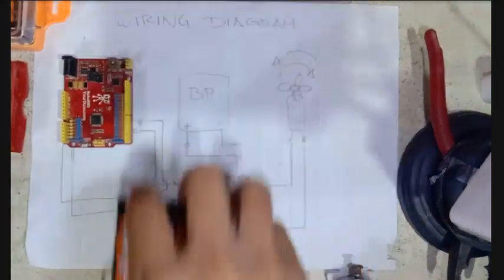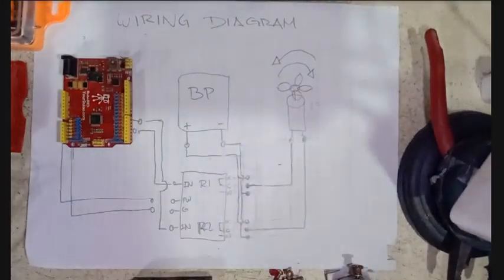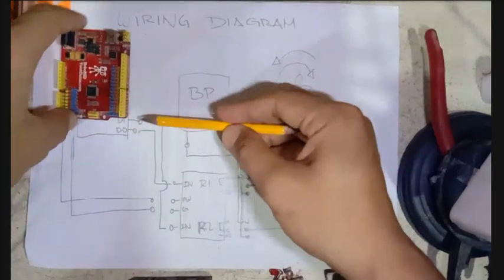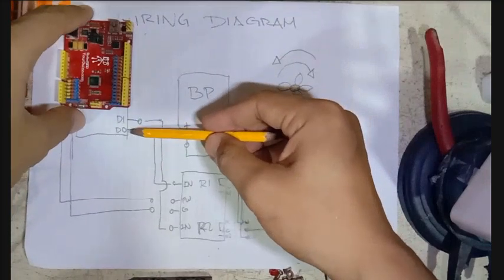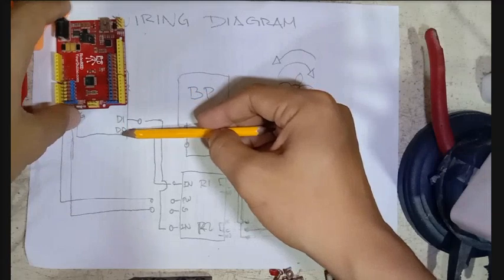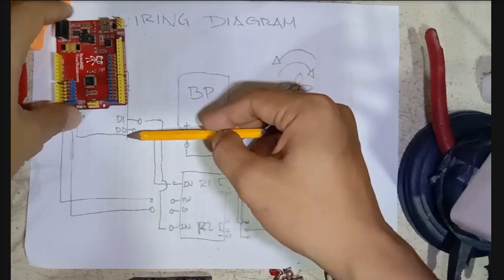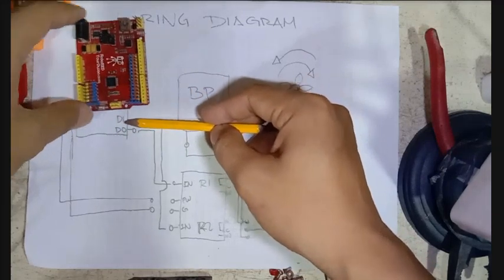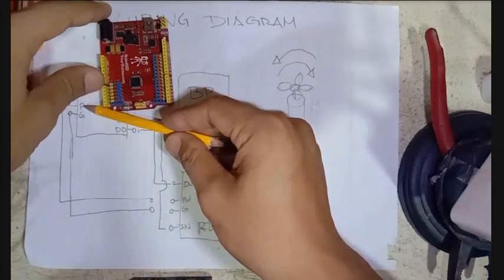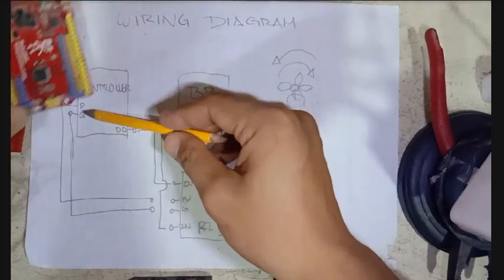So let's start with the controller. If you have questions please feel free to comment below. So we will be using two digital outputs from our controller. In this case let's use digital output zero and digital output one. And also we will use the power supply from our controller, the power and the ground, that is to supply our two relays.